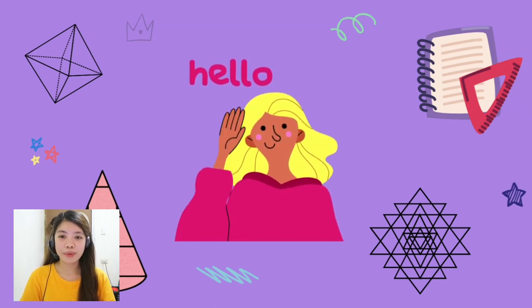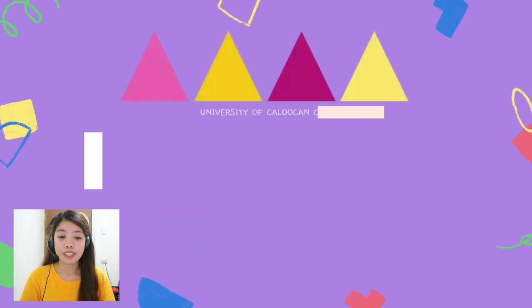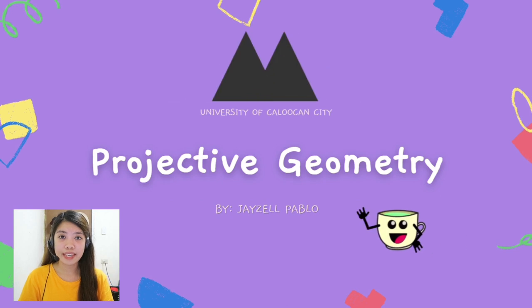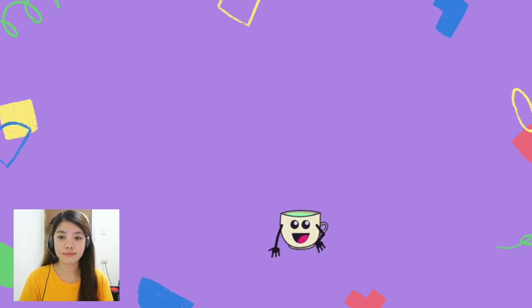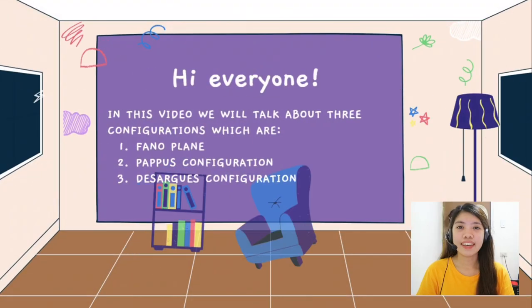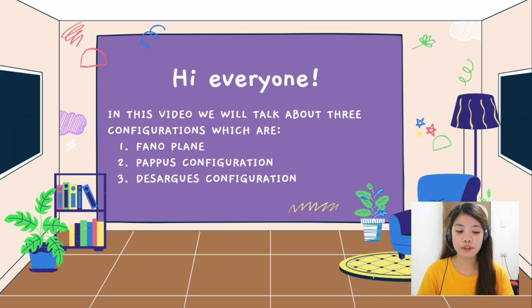Hello and welcome to Projective Geometry. My name is Jaisel. Hi everyone! In this video, we will talk about three configurations which are: 1. Fano Plane, 2. Pappus configuration, 3. Desargues configuration.